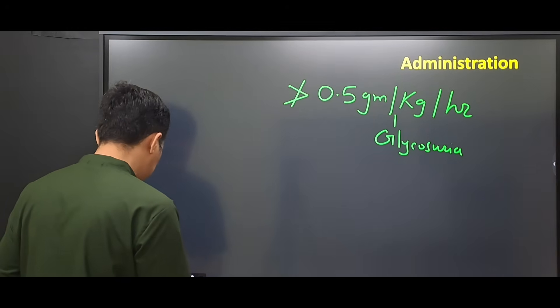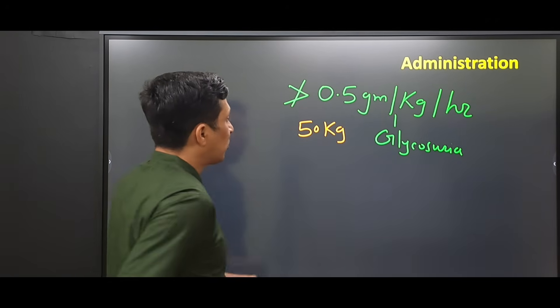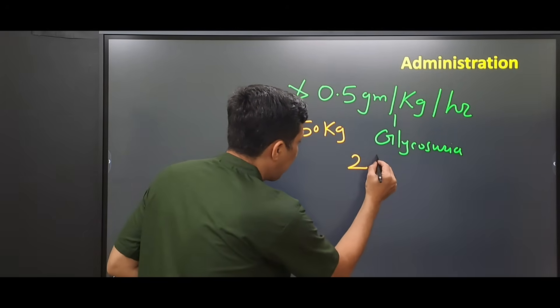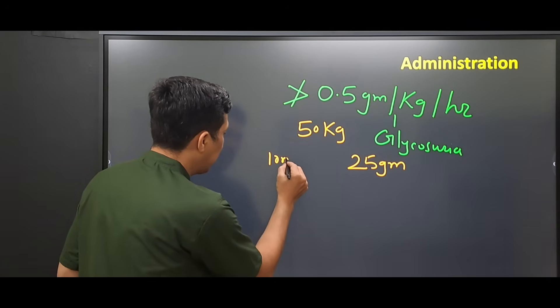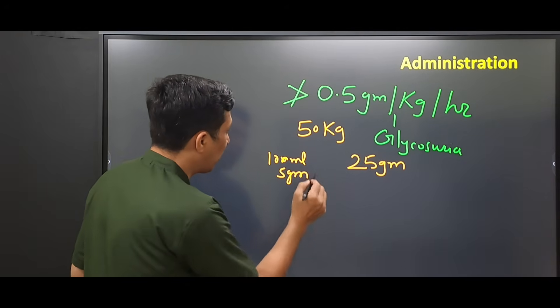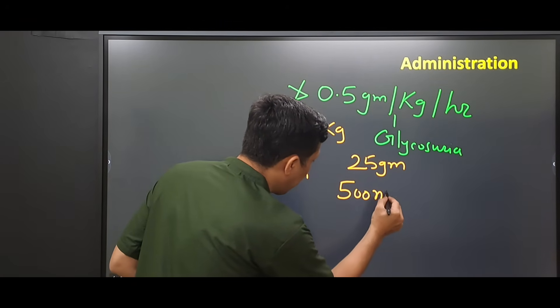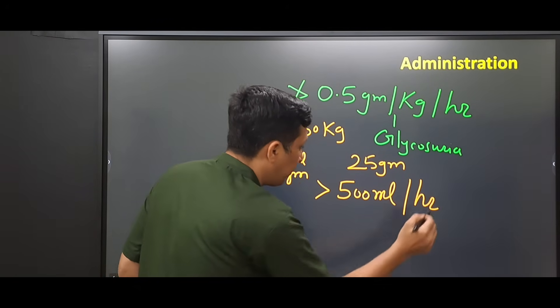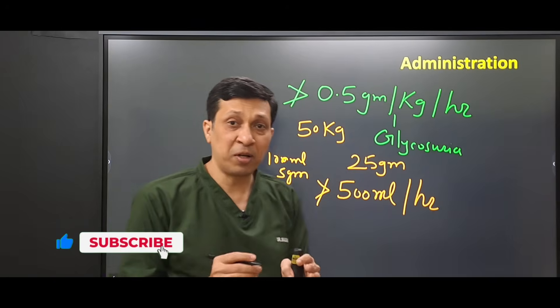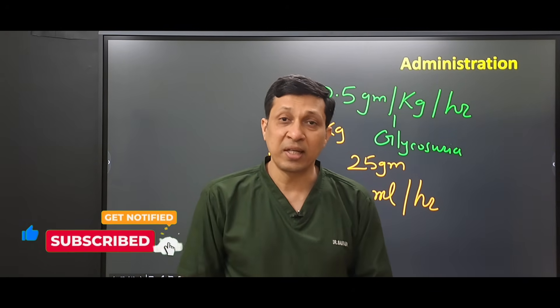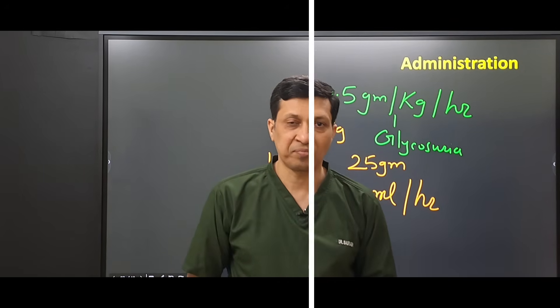For example, if there is a patient of say 50 kg, 50 times 0.5 equals 25 grams. And we have seen that each 100 ml of dextrose 5% contains 5 grams. So if there is a 50 kg patient, you cannot give fluid at the rate of more than 500 ml per hour. If you give this patient dextrose 5% by more than 500 ml per hour, this fluid will be useless and it will cause more dehydration.